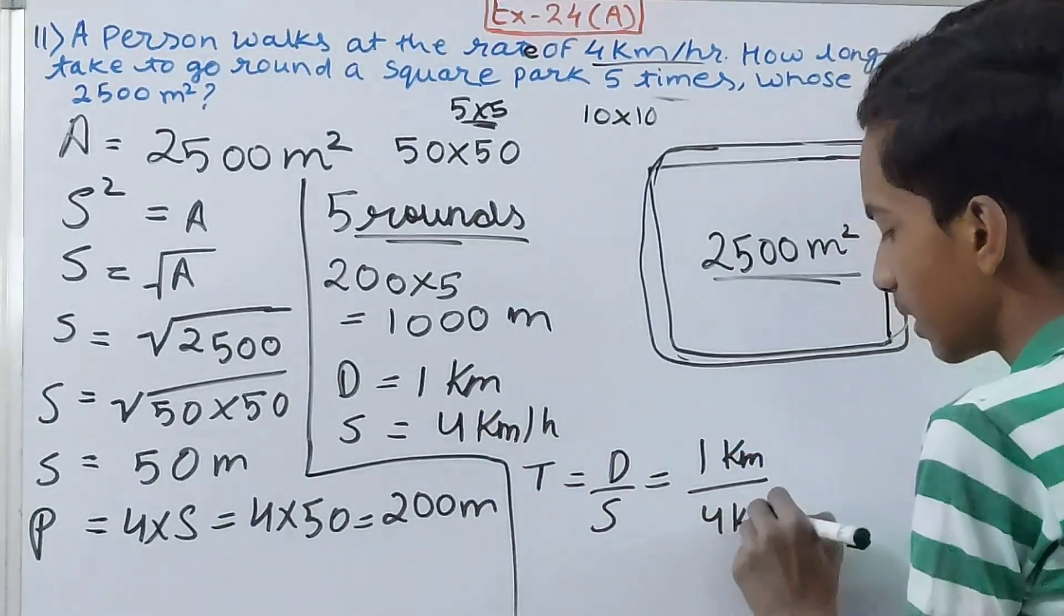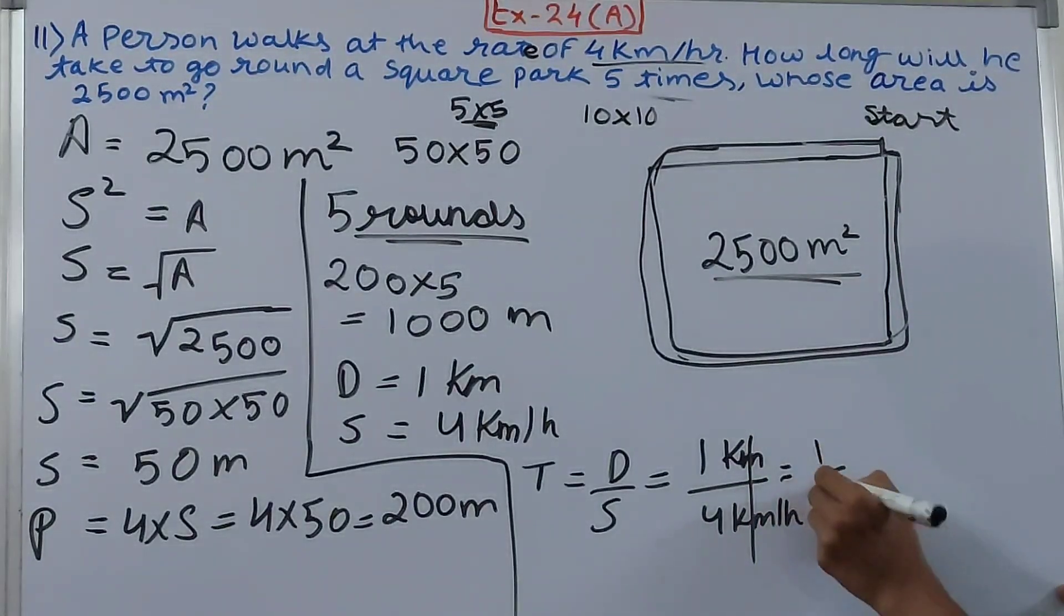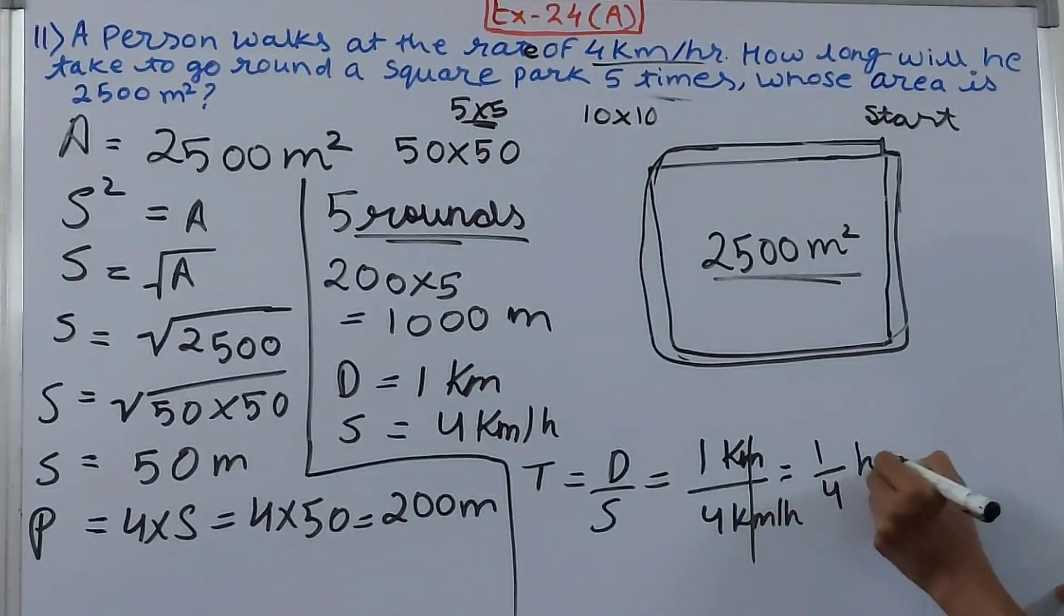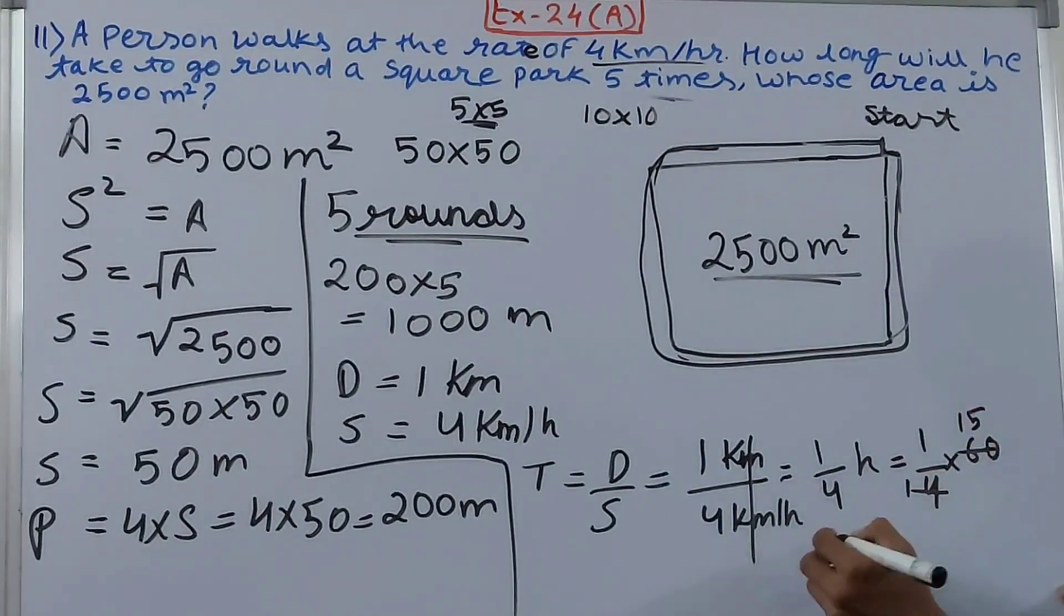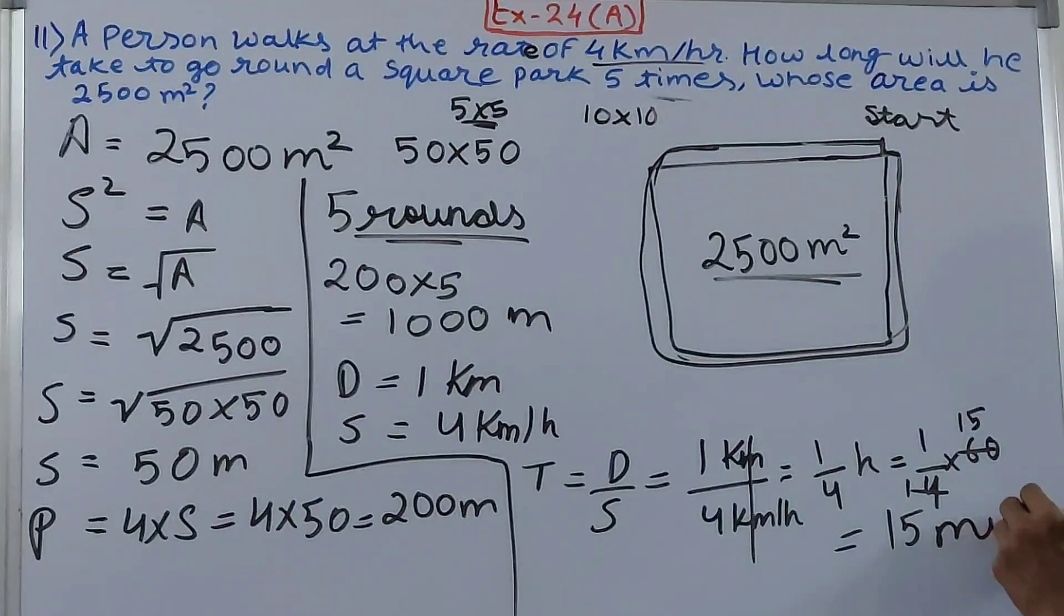Time equals distance upon speed, which is 1 kilometer upon 4 kilometers per hour. Kilometers cancel, so we get 1/4 hours. Convert this into minutes by multiplying 1/4 by 60, which gives us 15 minutes.